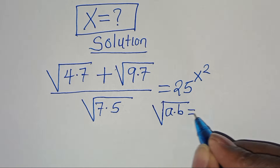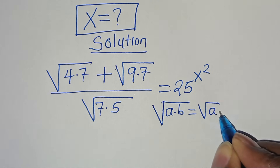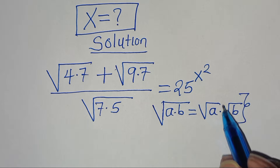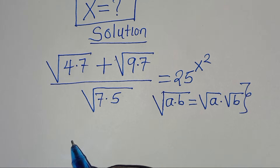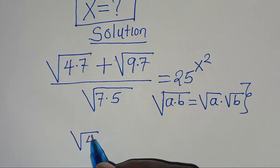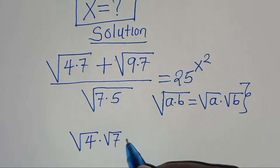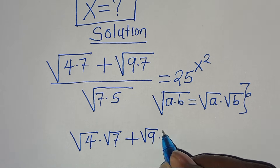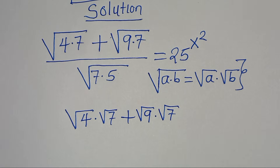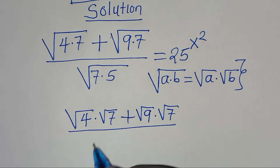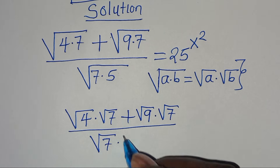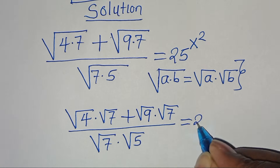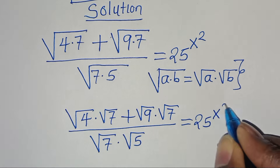We can express the square root of a multiplied by b as the square root of a multiplied by the square root of b. Now applying this property, in the numerator we have the square root of 4 multiplied by the square root of 7, plus the square root of 9 multiplied by the square root of 7, everything divided by the square root of 7 multiplied by the square root of 5. This is equal to 25 to the power of x squared.